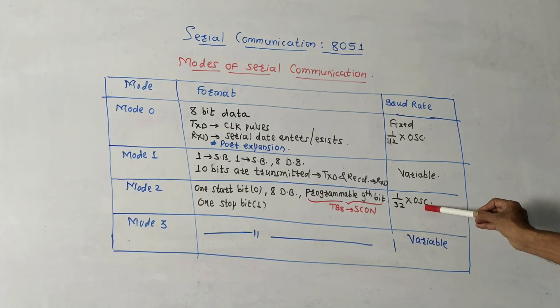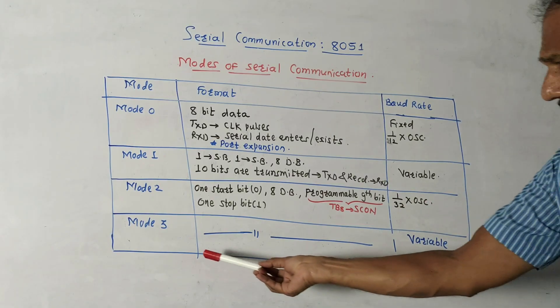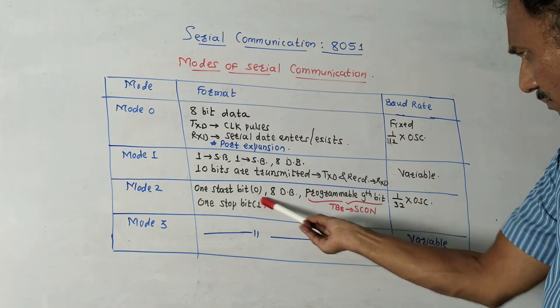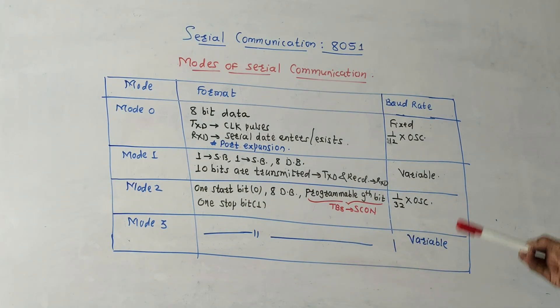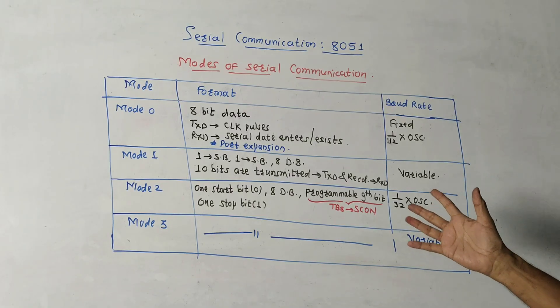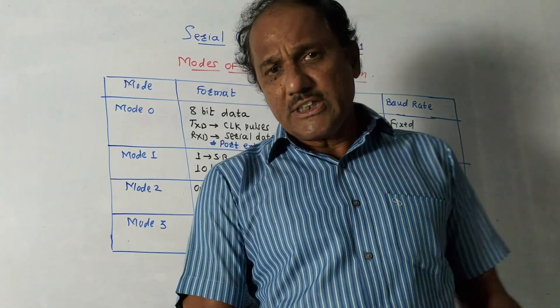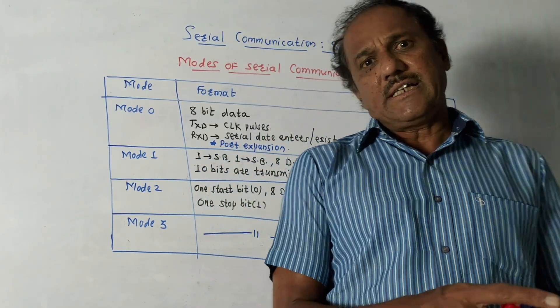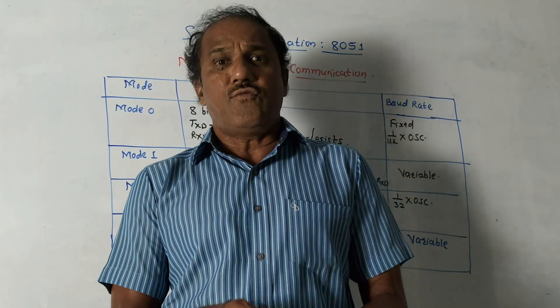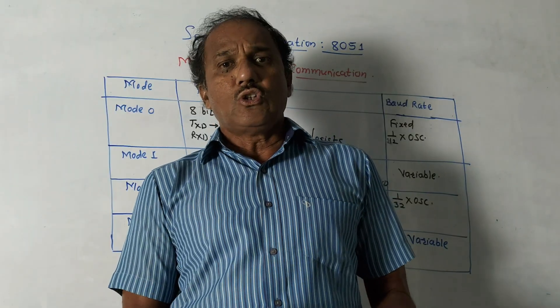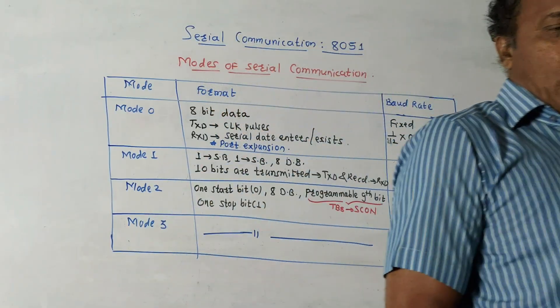Mode 3 is same. The combination is similar to mode 2, but the baud rate is variable. So it is very much important as far as these modes of serial communication are concerned. So dear students, that's it for this session and that's it for unit number one of 8051. Thank you. Thanks a lot for watching this video.